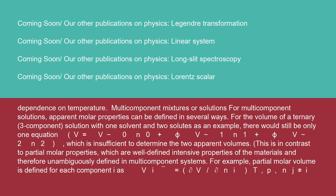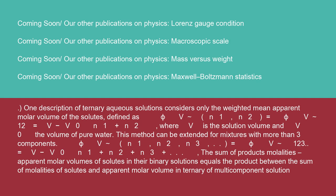Multi-component mixtures or solutions: for multi-component solutions, apparent molar properties can be defined in several ways. For the volume of a ternary (three-component) solution with one solvent and two solutes as an example, there would still be only one equation V = V⁰N₀ + φV₁N₁ + φV₂N₂, which is insufficient to determine the two apparent volumes. One description considers only the weighted mean apparent molar volume of the solutes: φV(N₁,N₂) = φV₁₂ = (V - V⁰)/(N₁ + N₂), where V is the solution volume and V⁰ the volume of pure water.